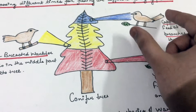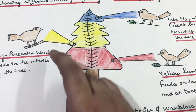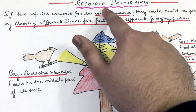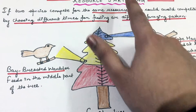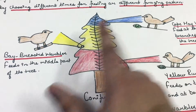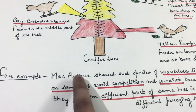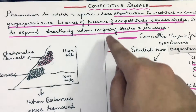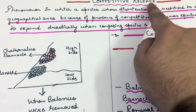As a result, warblers co-exist and avoid competition. This is called resource partitioning. This phenomenon of warbler feeding was discovered by MacArthur.